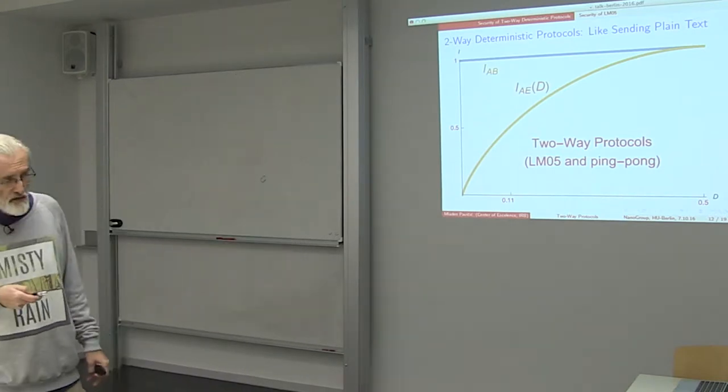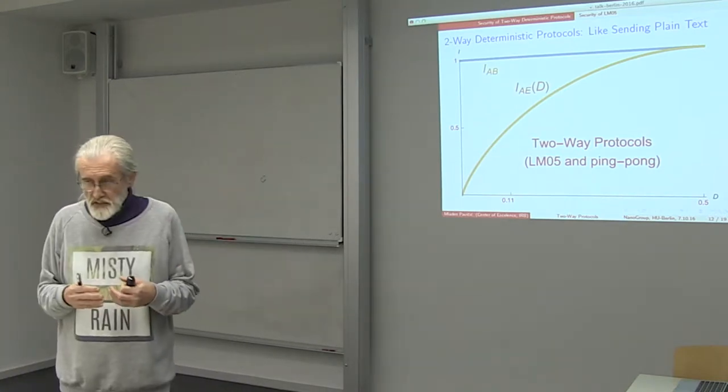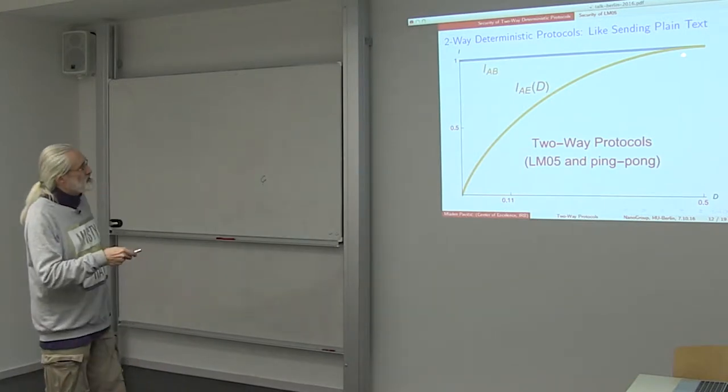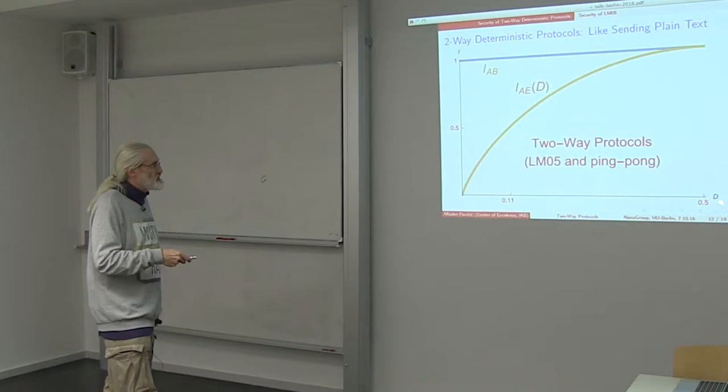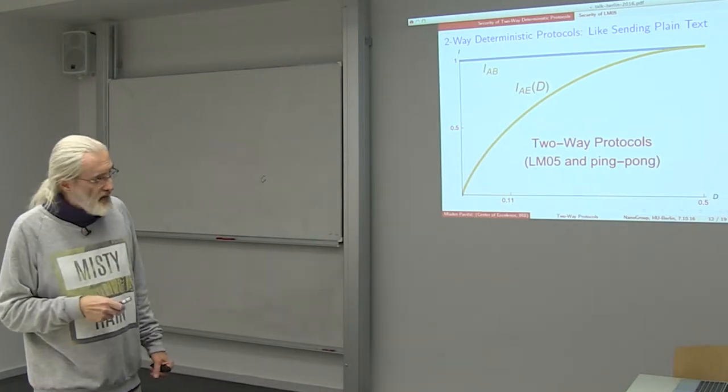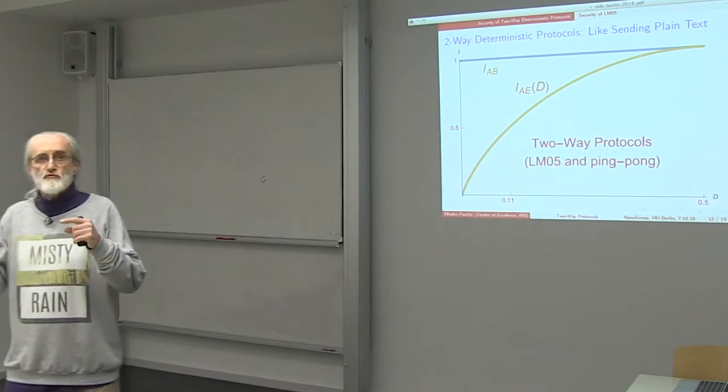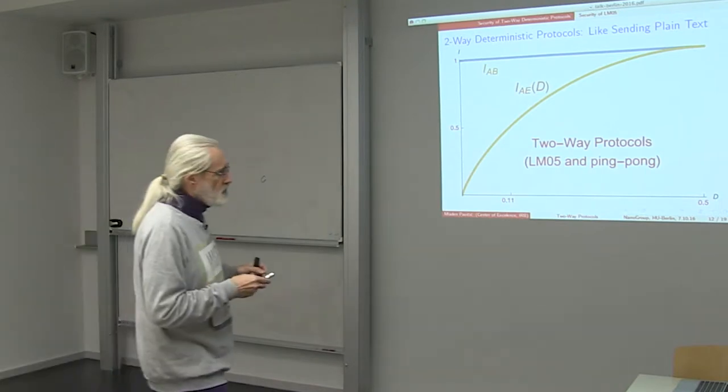Meaning that Bob is receiving all the messages from Alice as they are. Eve can switch in or not, and depending on how many sendings she intercepted in percentages, we can have such a curve in which disturbance which is on the x-axis refers not to the message mode but to control mode.